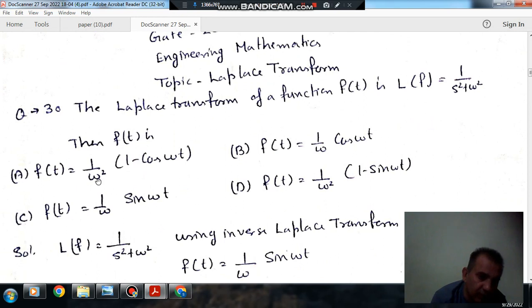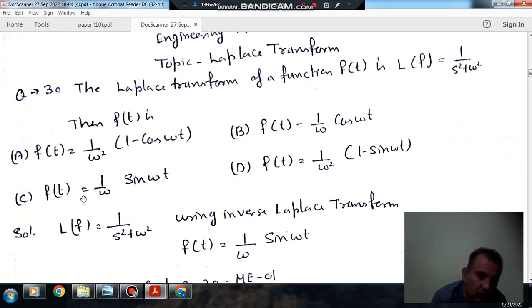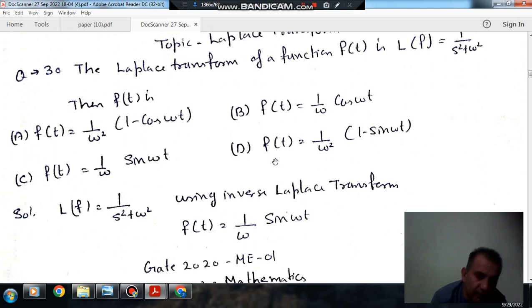Option (a): f(t) = 1/ω² (1 - cos ωt). Option (b): f(t) = 1/ω sin ωt.